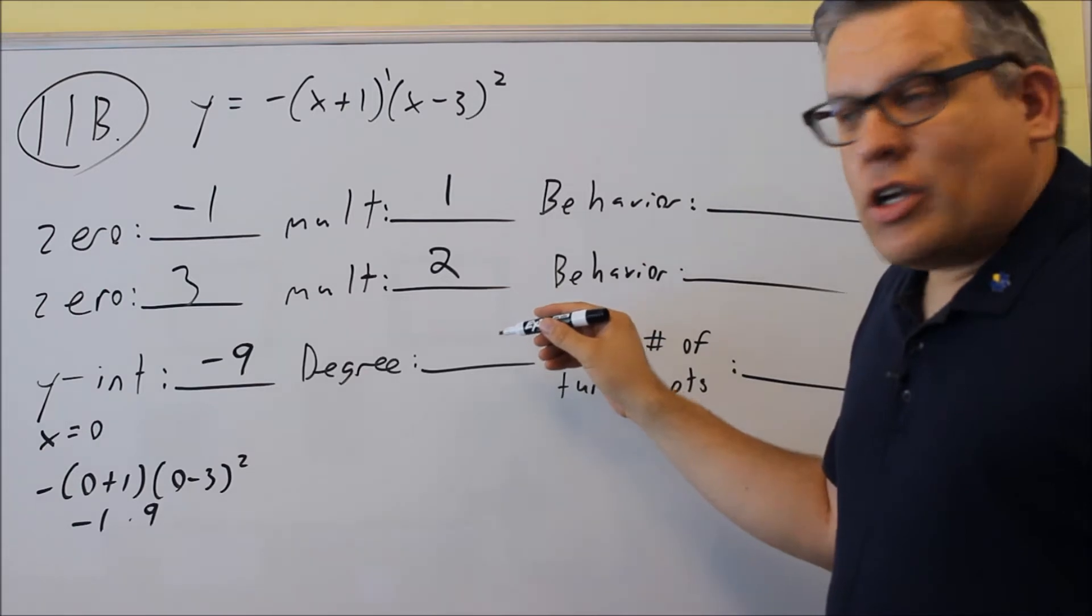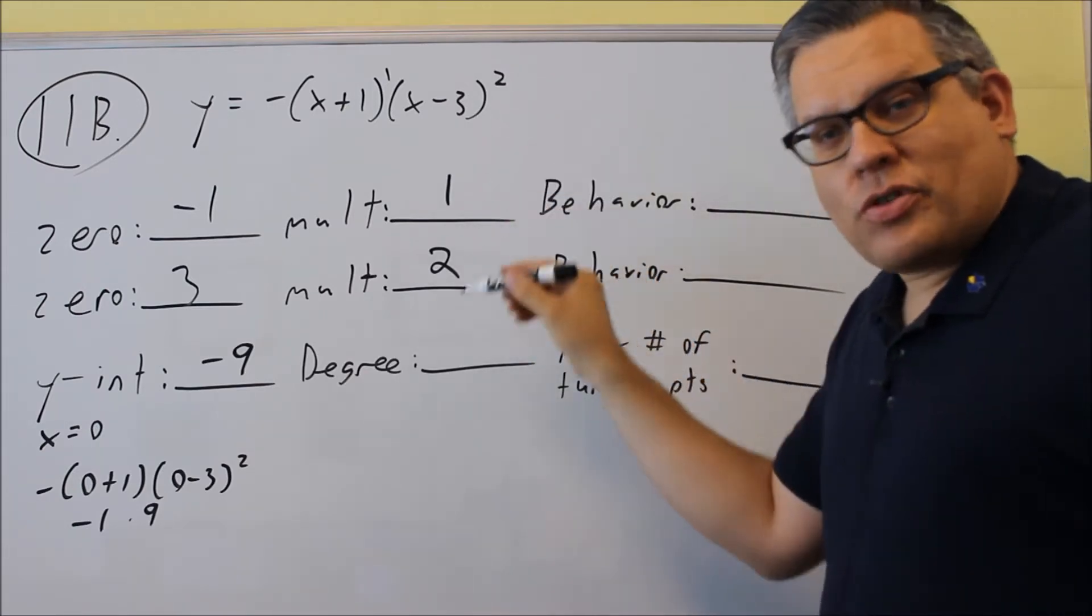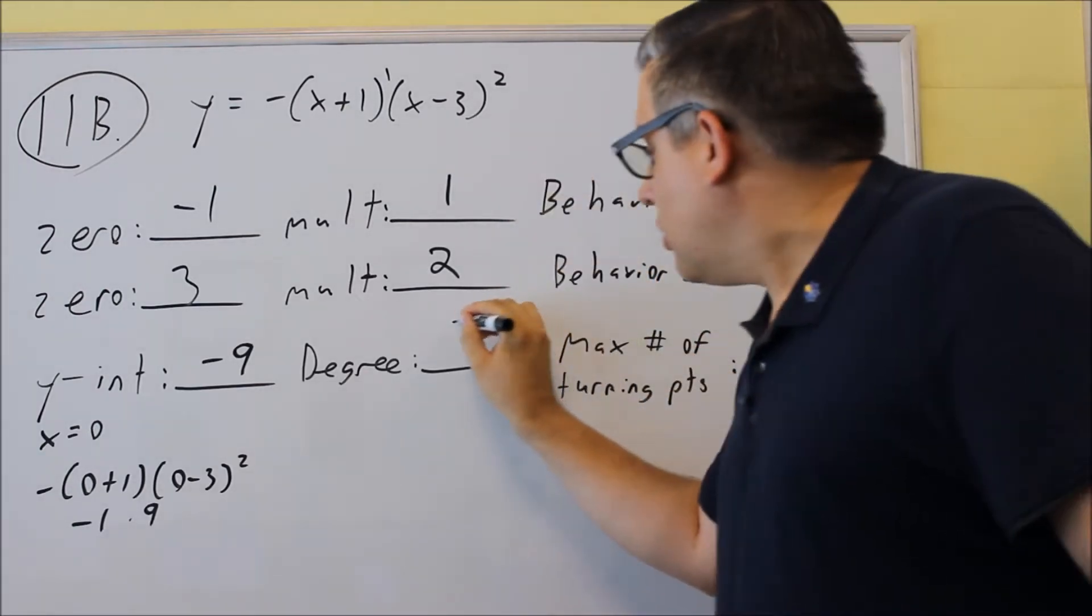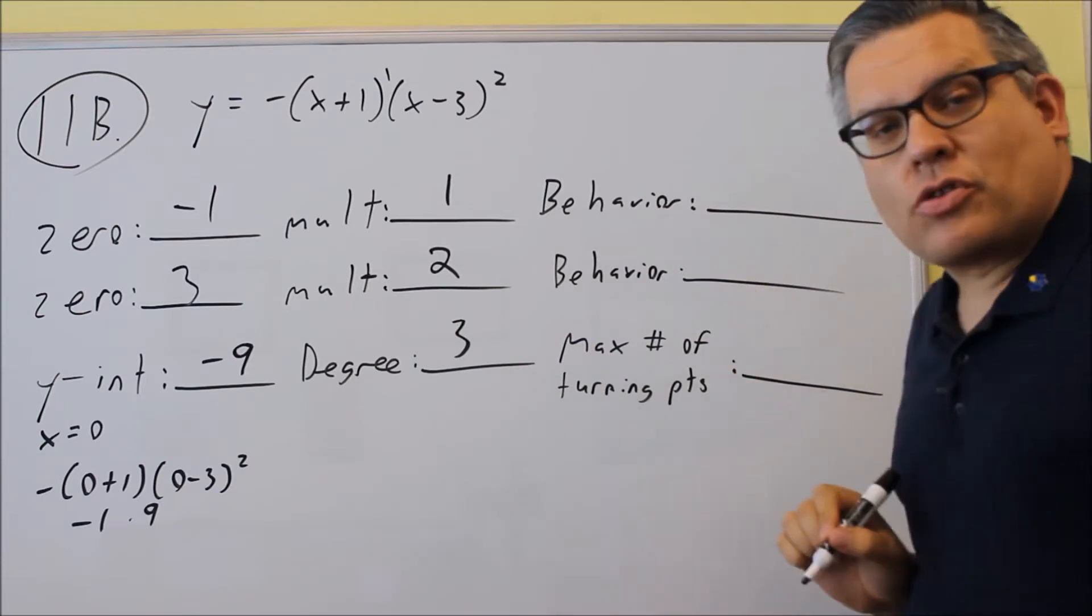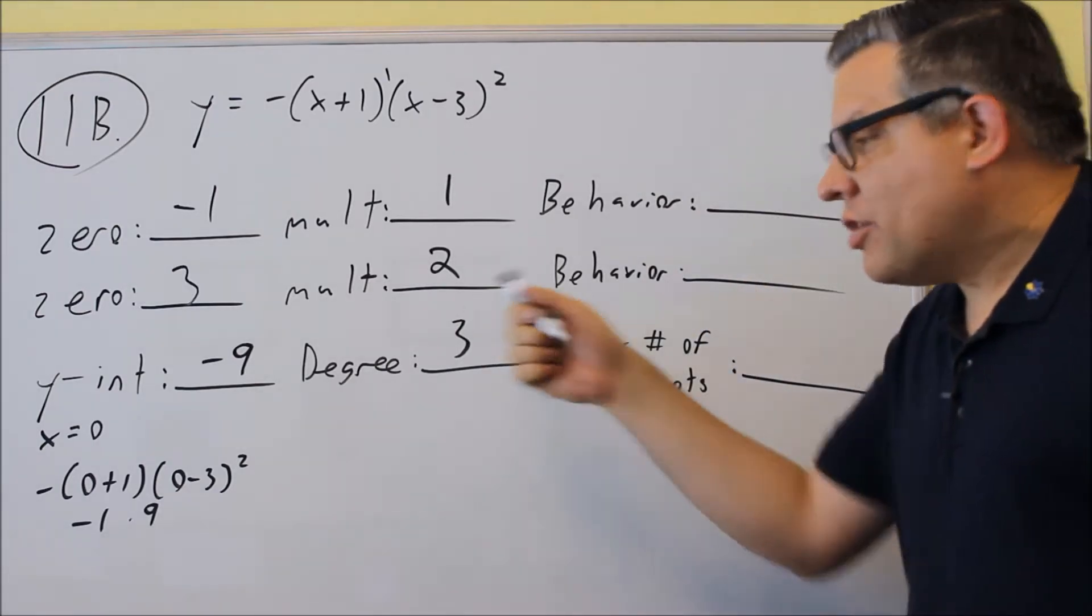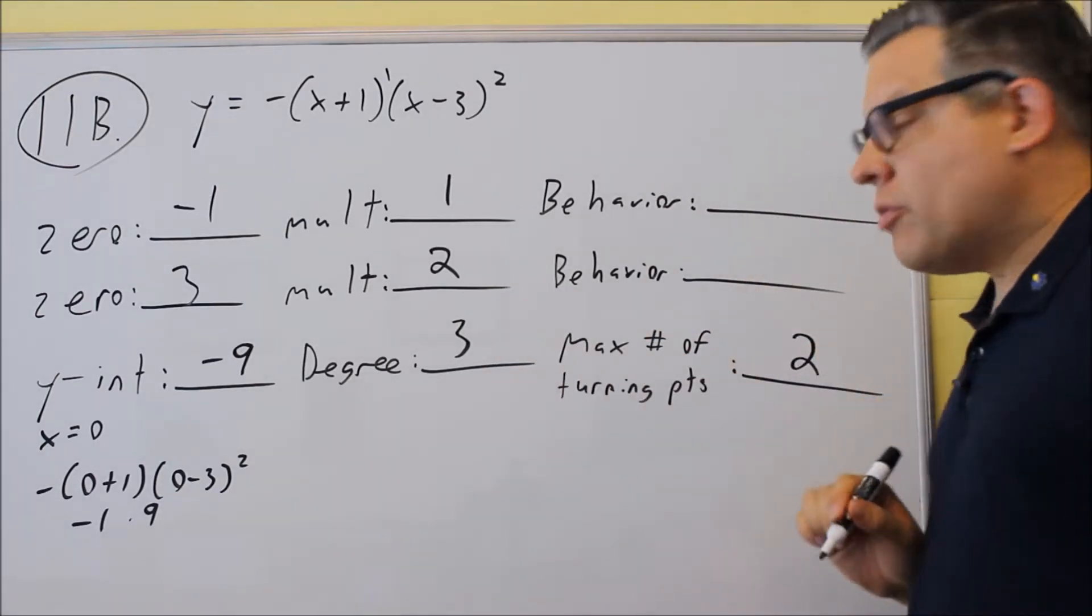Next, we're going to do the degree. The degree is always the sum of the multiplicities. So if we add these two together, we get three. The max number of turning points is always going to be one less than your degree, which means that's going to be equal to two.